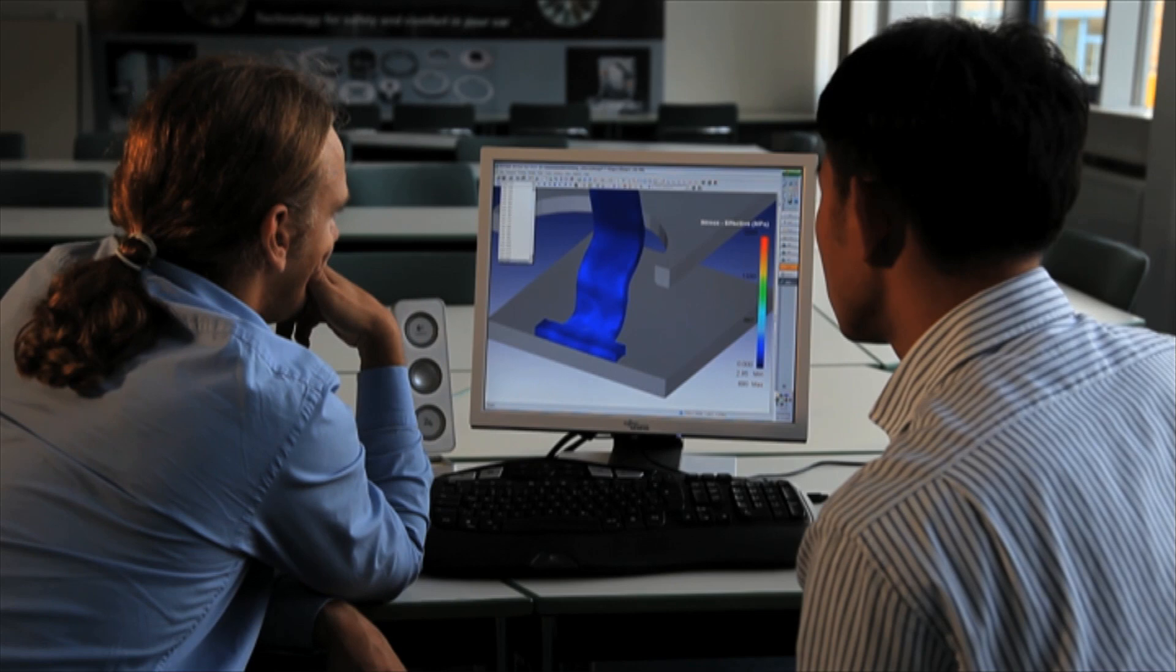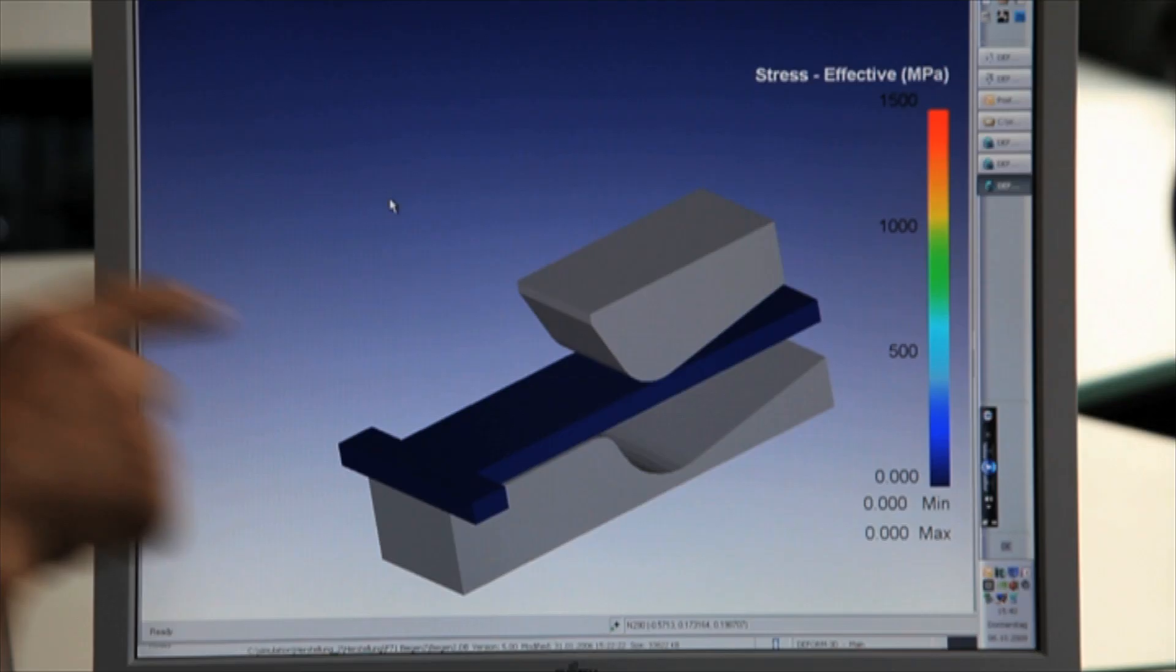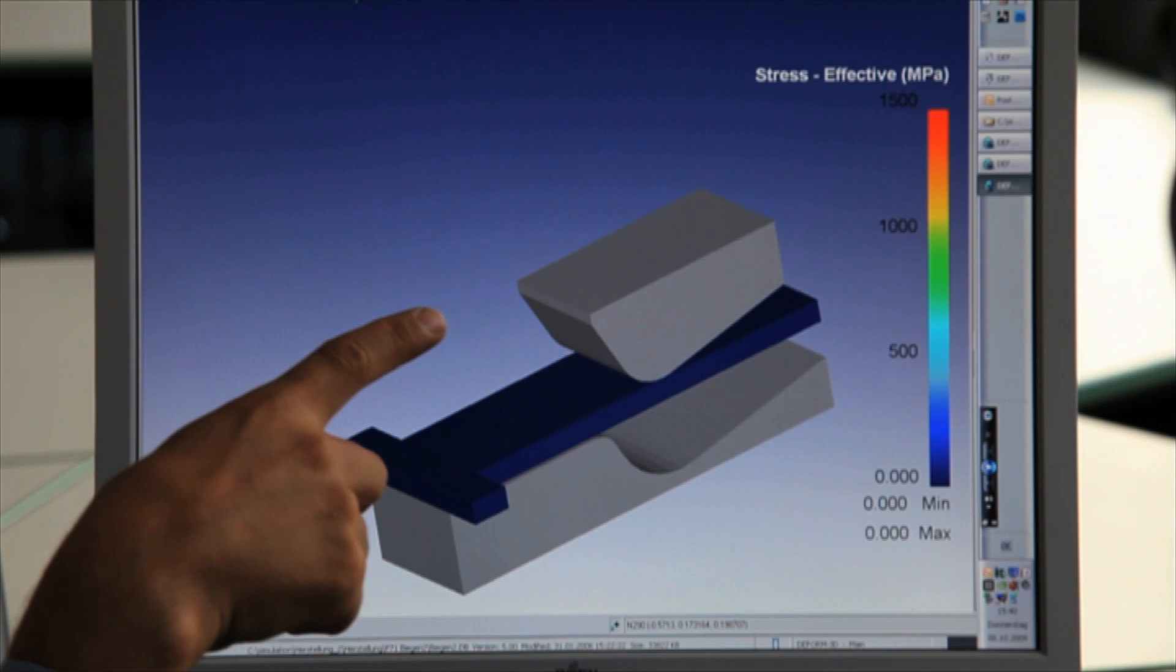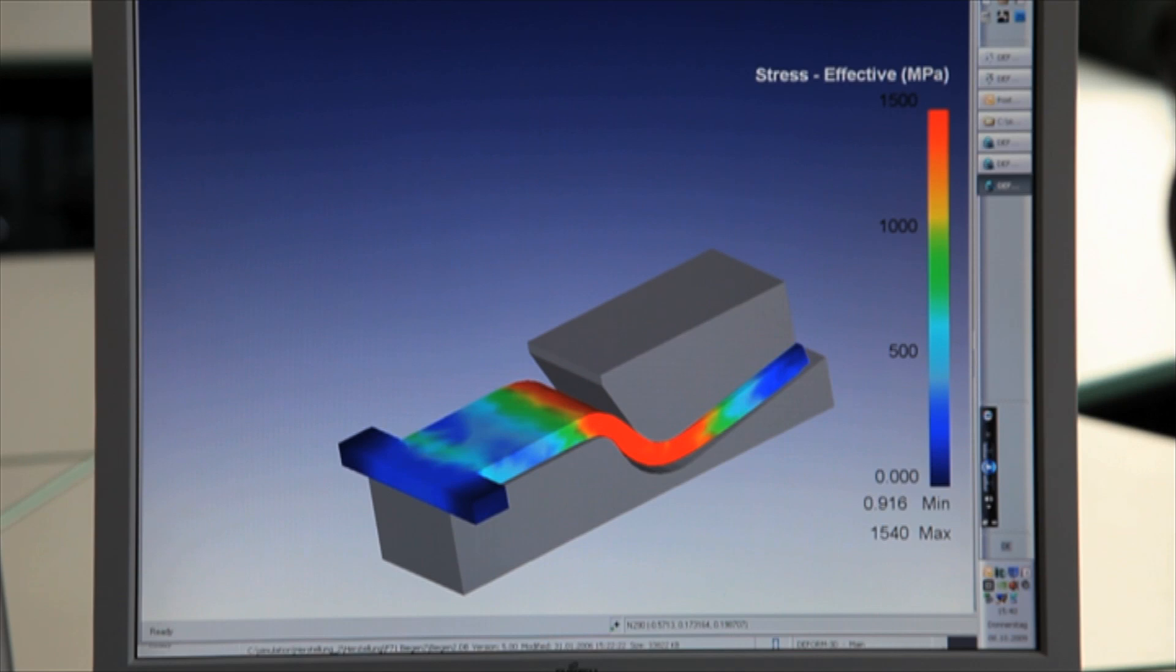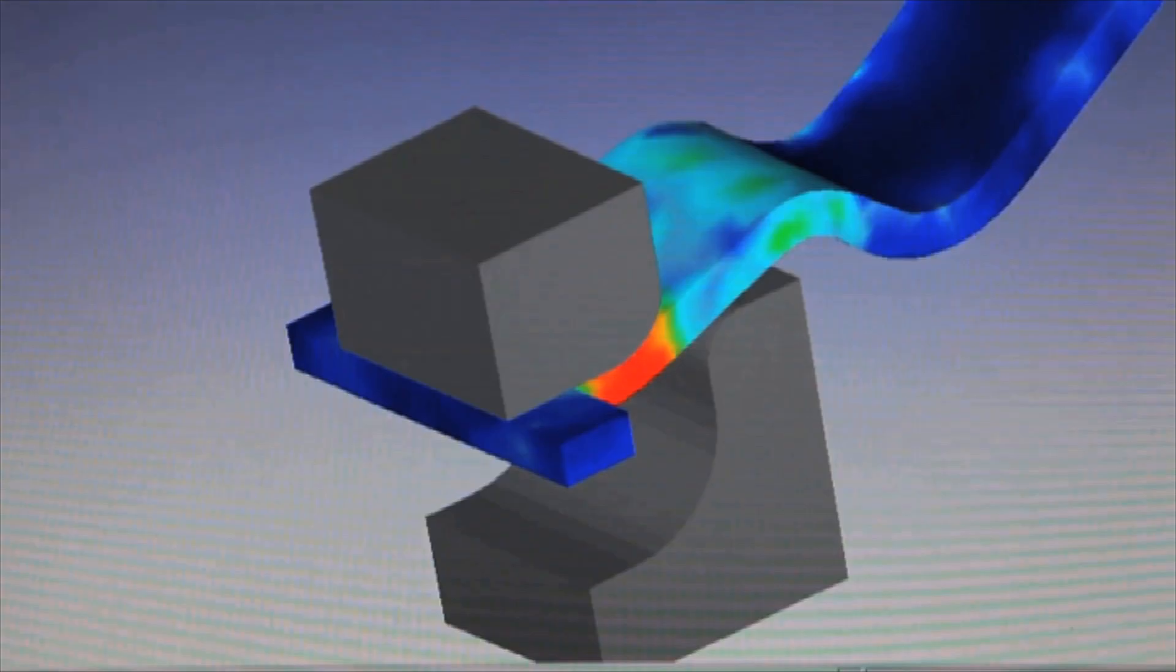The computer simulates how the metal sheet can be best bent, so as to avoid that excessive energy during bending might overstress the metal or even destroy it. The areas exposed to high tension turn red. This tension is what the scientists are trying to avoid, otherwise the stability of the material would suffer.